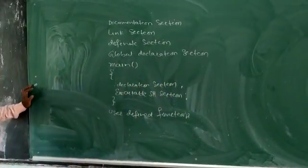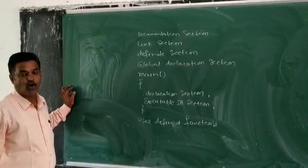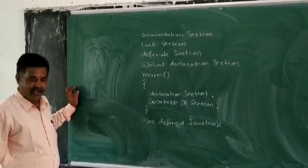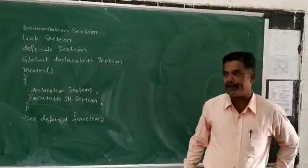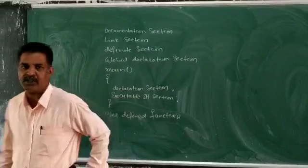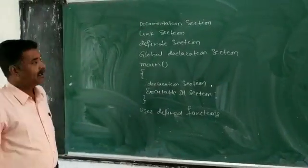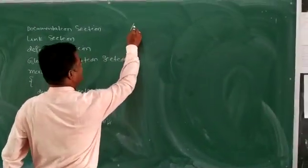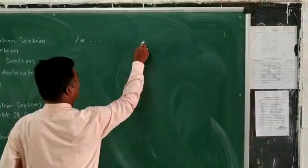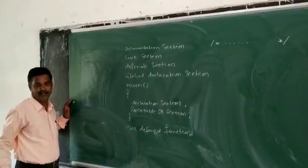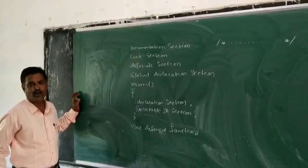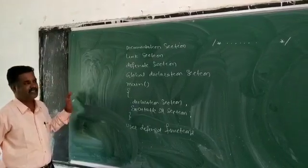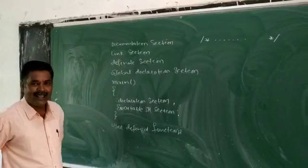This is the structure of a C program. The first one is the documentation section. Documentation is nothing but the title of the program, author of the program, date written, date compiled — just information about the program and programmer. It is denoted by slash-asterisk ( /* ) and asterisk-slash ( */ ). Documentation section is not mandatory.